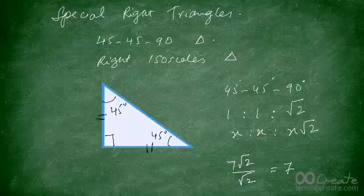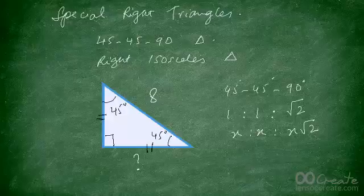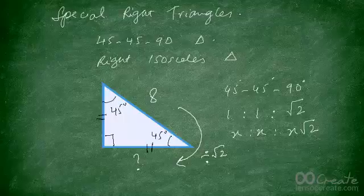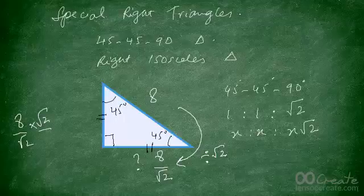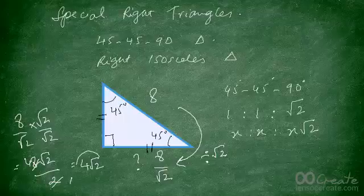What if the hypotenuse has a length of 8 and you're asked to find the length of the base? To go from the hypotenuse back to the base, we divide by √2. So the answer is 8 divided by √2. To rationalize this, multiply by √2 over √2, giving 8√2 divided by 2, which simplifies to 4√2. So the base equals 8 divided by √2, which can also be written as 4√2.